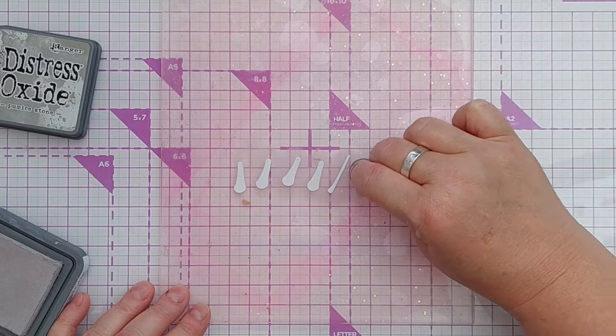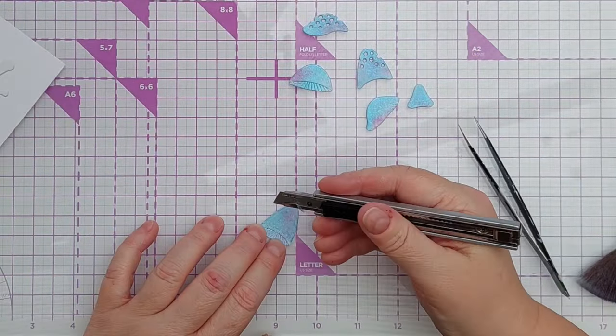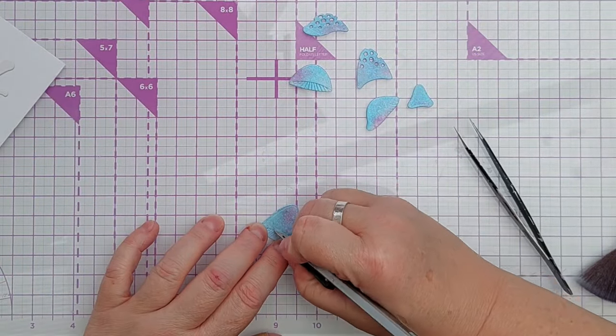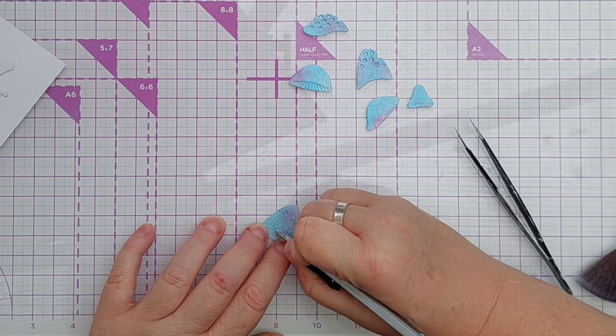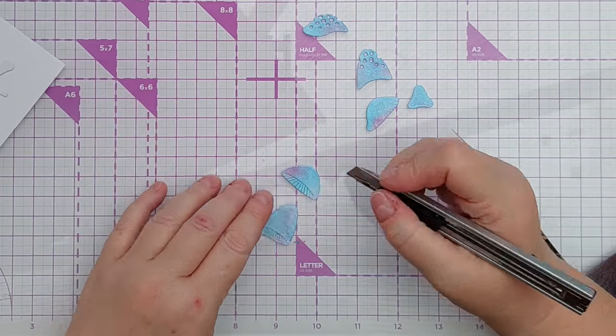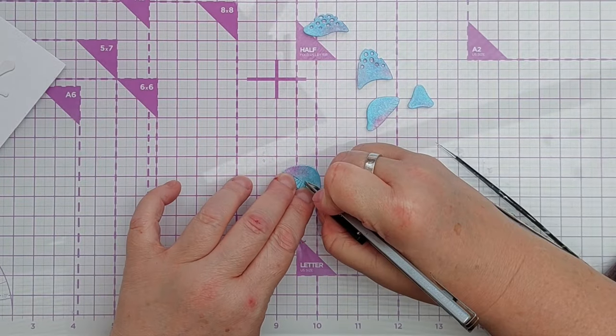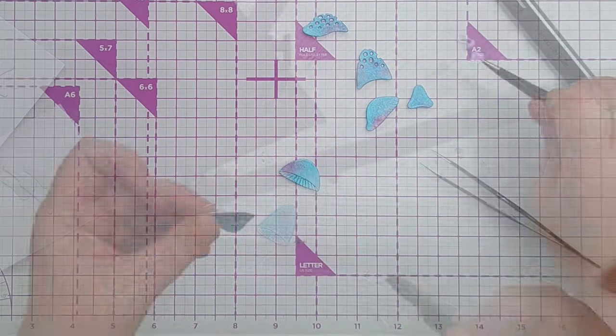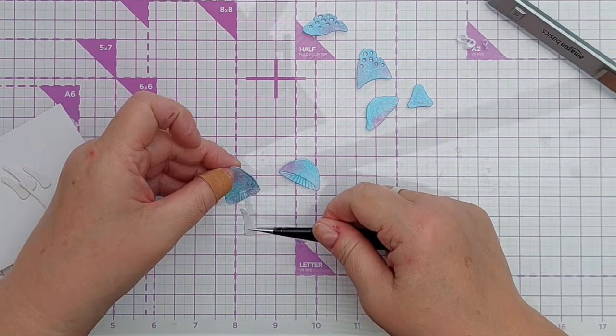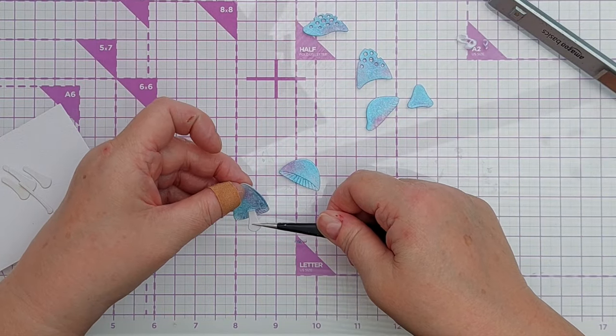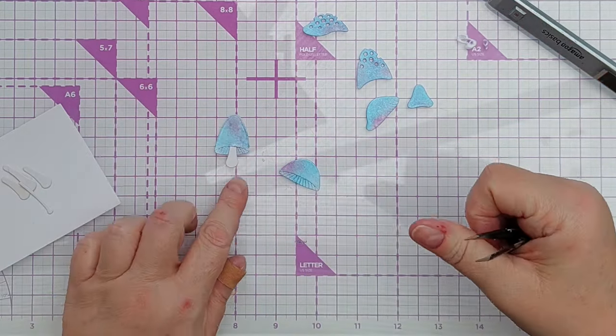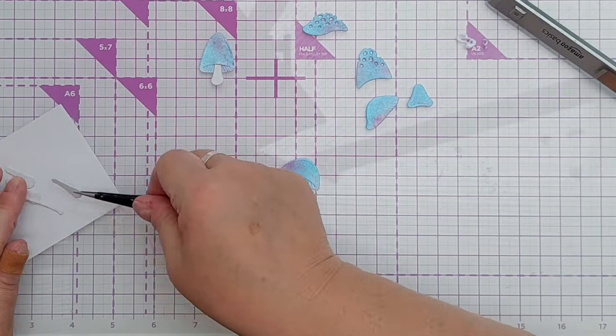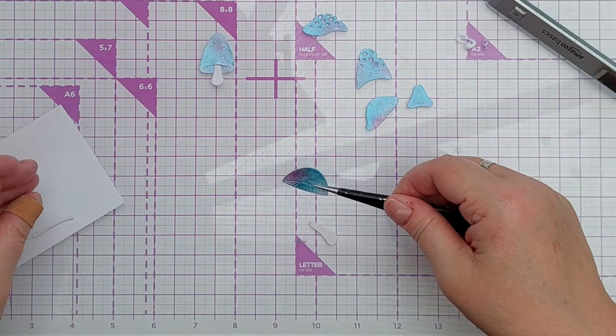After that I used a craft knife to cut some slits in two of the mushroom caps. These were to poke the stalks through, because not all the mushroom caps in this die set are the same style. Some of them you can just stick the stalk on the back and it looks right, but these two I think needed the stalk to go through the slit that I cut.